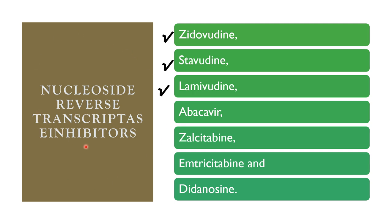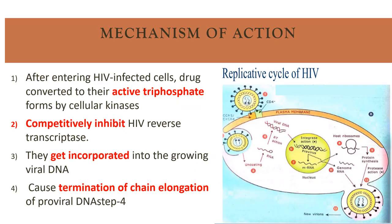The first group — nucleoside reverse transcriptase inhibitors — includes zidovudine, stavudine, lamivudine, abacavir, zalcitabine, emtricitabine, and didanosine. Zidovudine, stavudine, and lamivudine are the most important drugs in this group. Their mechanism: after entering the HIV-infected cell, the drug is converted into its active triphosphate form by cellular enzyme kinase. It then competitively inhibits reverse transcriptase enzyme, gets incorporated into the growing viral DNA, and causes termination of chain elongation of viral DNA.